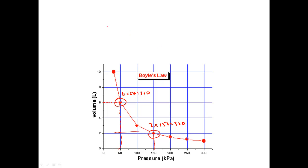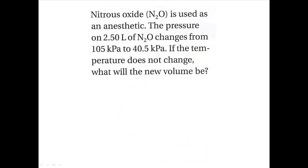What this means is that pressure and volume for an initial set of conditions will be the same value for a second set of conditions. P1 times V1 equals P2 times V2. Let's use this equation to solve a gas problem.